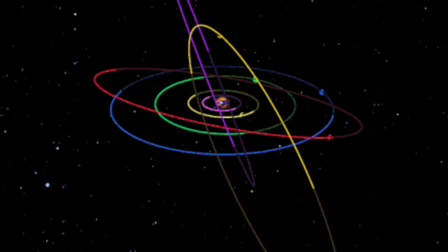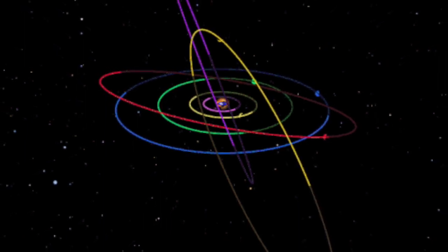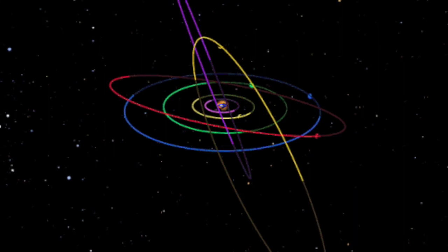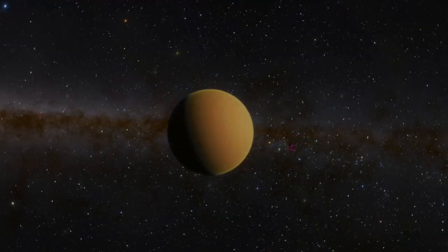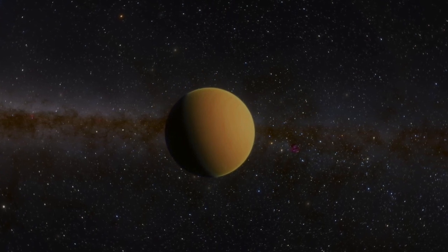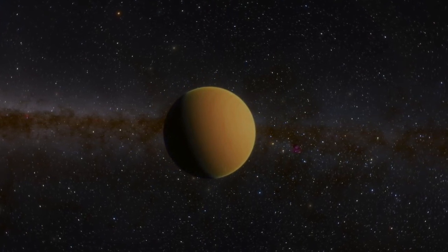Initially, scientists believed NICU could be the hypothetical ninth planet, which they have been searching for on the far edge of the solar system beyond Pluto. One of the theories is that the gravity of a large object is affecting the exoplanet NICU, making it orbit at an angle different to other planets.